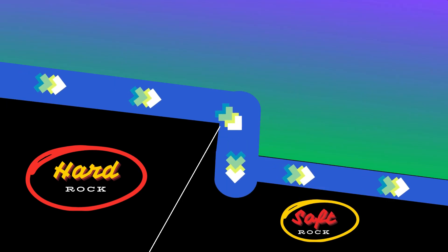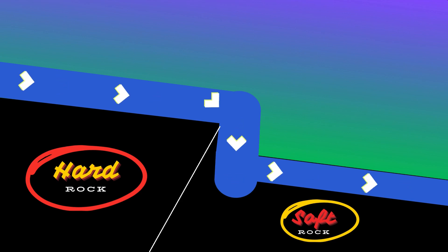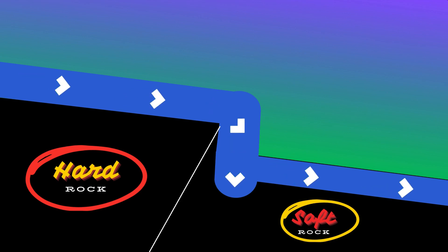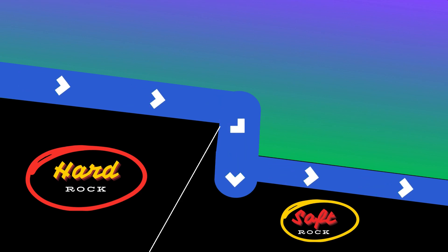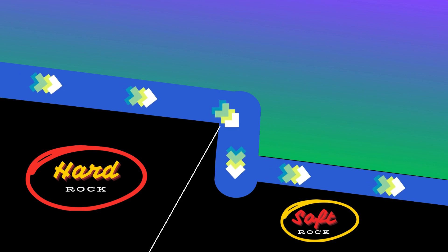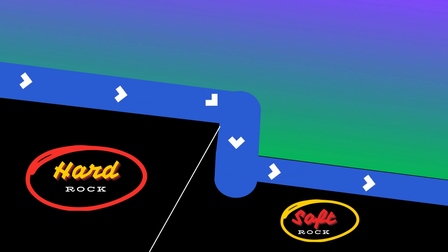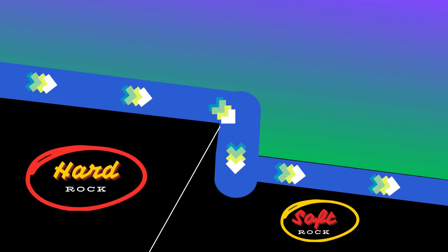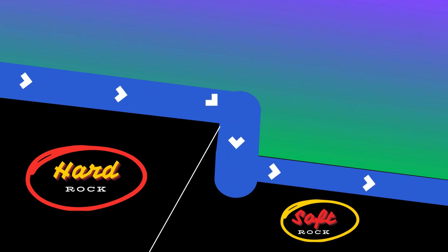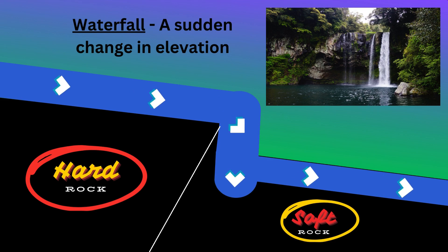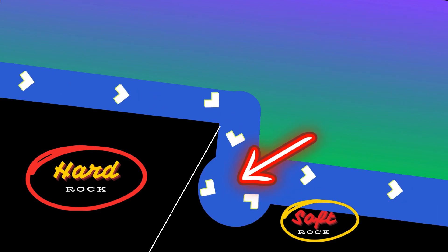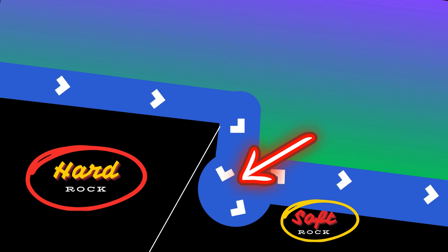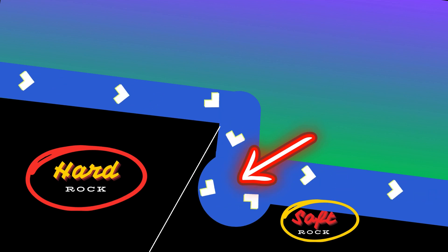Over time, the erosion of the softer rock creates a vertical drop or cliff, while the harder rock above remains intact, creating a sudden change in elevation known as a waterfall.